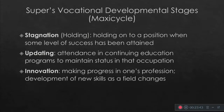Stagnation is the holding stage — holding on to a position when some level of success has been achieved. They can see themselves staying there until they retire. Next would be updating — attendance in continuing education programs to maintain status in that occupation. For example, you take up your master's, then after that your professional license, and then study again for a PhD or another master's course.